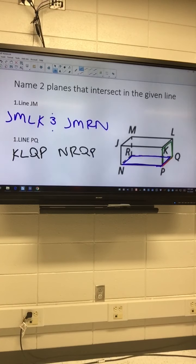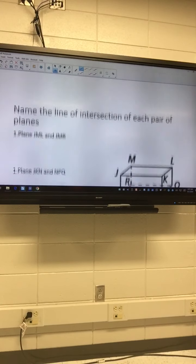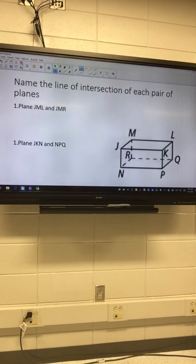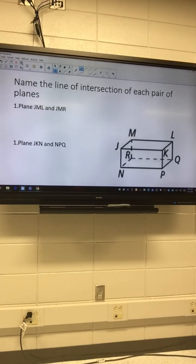Okay, go two more slides down. It says, name the line of intersection of each pair of planes. Go to that slide. They all kind of look the same, so you've got to really look at it and make sure you're on the right one. You've got nothing but a great grade this entire time. Really? Yeah, so you have no reason for playing. Plane JML. So, find that first.